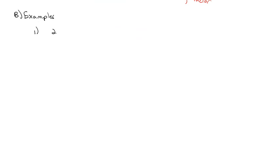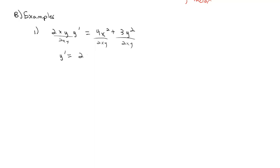The first example is 2xy·y prime equals 4x squared plus 3y squared. We don't like the y prime to have extra factors, so we divide everything by 2xy. That gives us y prime equals 2x times y to the negative 1 plus 3 over 2x times y. Moving the y term to the left, we have y prime minus 3 over 2x times y equals 2x times y to the negative 1.